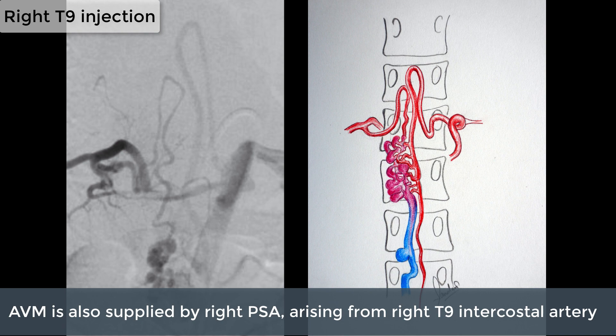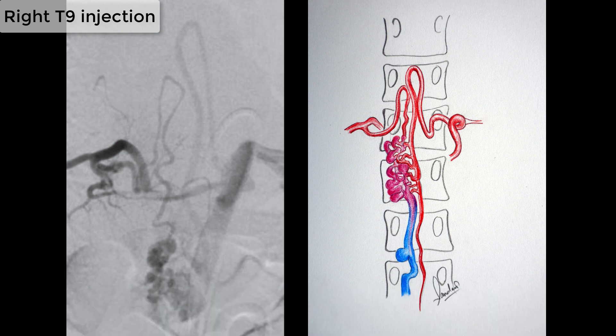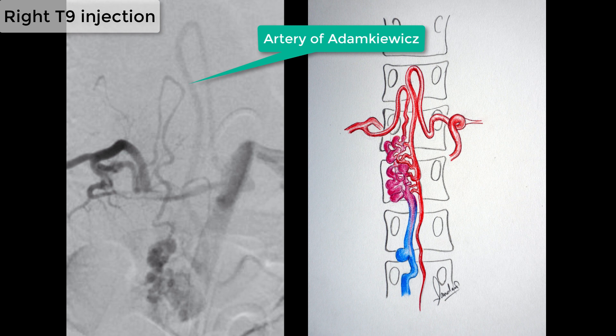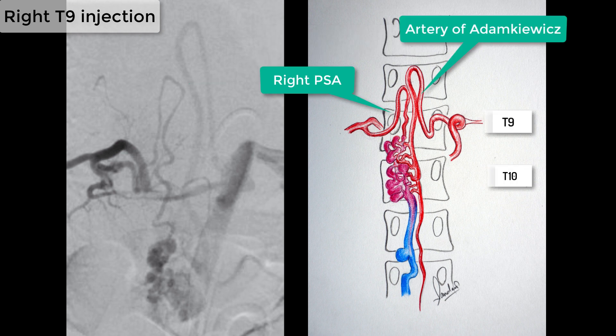Right T9 intercostal injection showed origin of the right posterior spinal artery, which is also supplying the AVM. In the same image, we could also see the faint visualization of the artery of Adamkiewicz supplying the AVM. On the left side of the screen we could see the artistic impression of the angiographic findings.